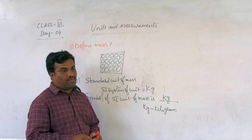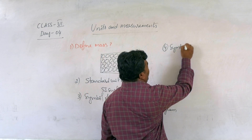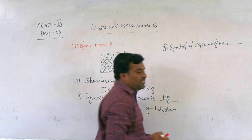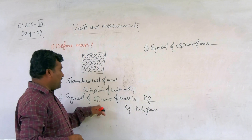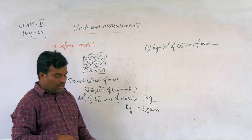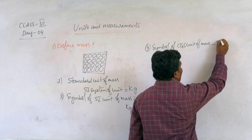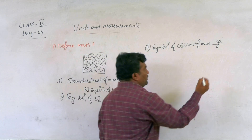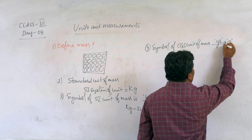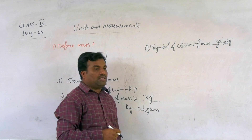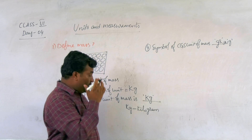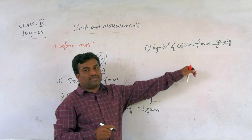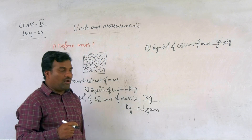Now, the symbol of the CGS unit of mass. The CGS unit of mass is gram. The symbol is small g, or gr — both are correct. Symbol of the CGS unit of mass is g or gr. And remember: symbol of the SI unit of mass is Kg, symbol of the CGS unit of mass is gram or g. Always remember these two values.